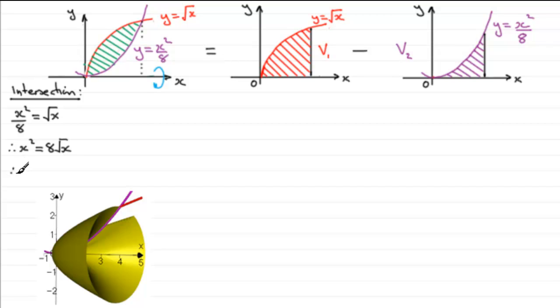So if we do that we therefore have x to the power 4 equals 64 x. And with this if we now just subtract 64 x from both sides we're therefore going to have x to the power 4 minus 64 x equals 0. Factorize this, pull out x and you're going to have x bracket x cubed minus 64 and that's going to equal 0.